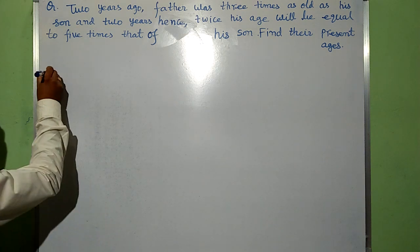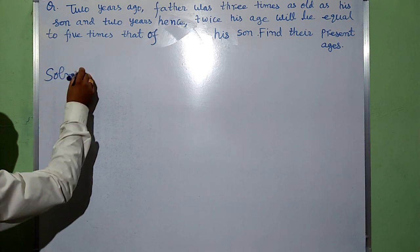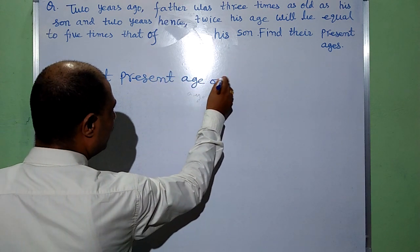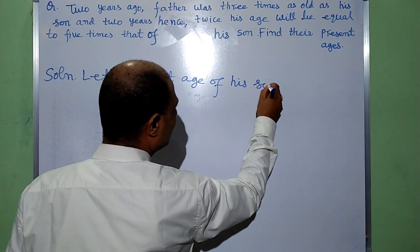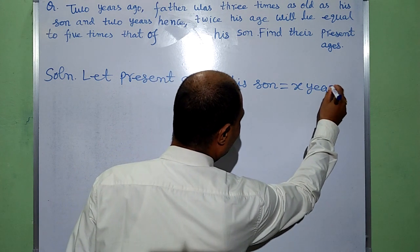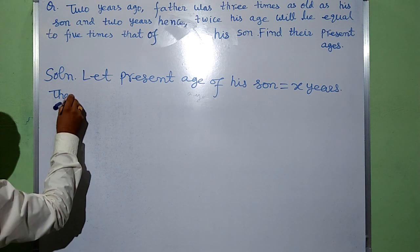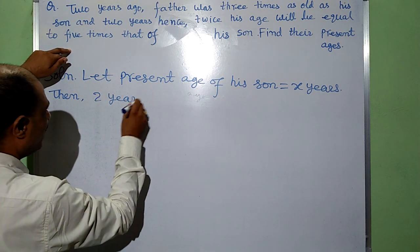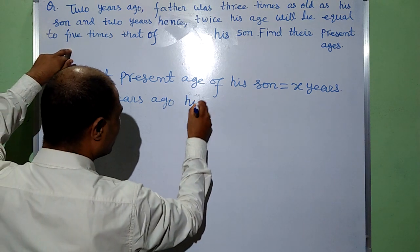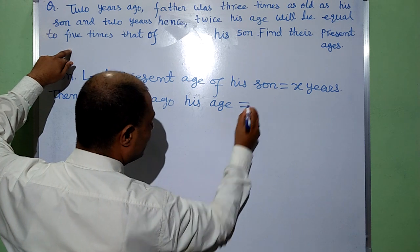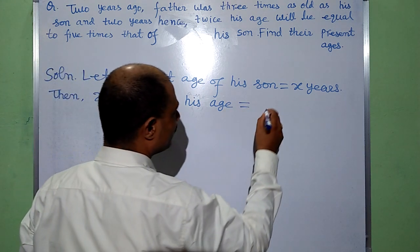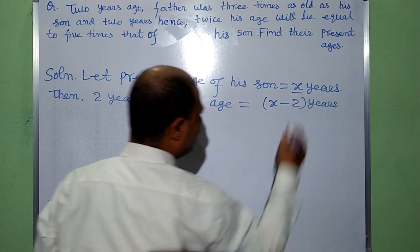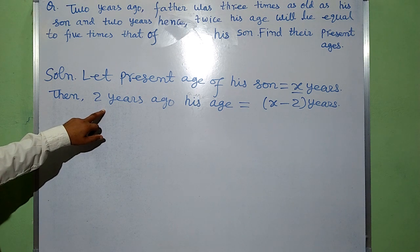Solution. Let the present age of his son be equal to X years. Then, 2 years ago, his age was equal to X minus 2 years. As present age is X years, then 2 years ago his age was X minus 2 years.